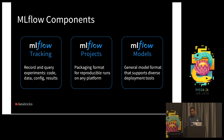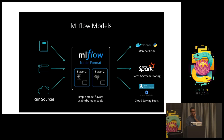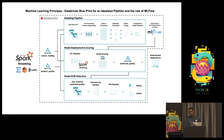MLflow Projects is the package standardization component, and MLflow Models is the deployment component built on that standardization. There are multiple deployment flavors — MLflow abstracts deployment onto whichever service is most convenient: Spark, REST API, or Azure ML. All of this is open source in Python. A complex reference pipeline shows how to use MLflow alongside the other tools discussed for drift detection, model monitoring, deployment scoring, and model pipelines.